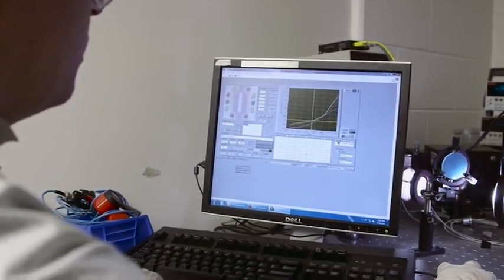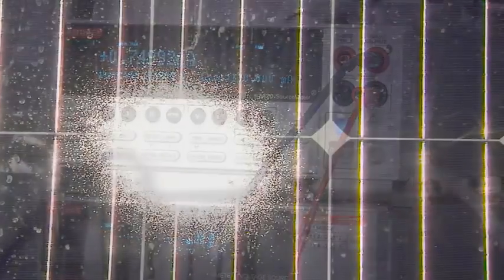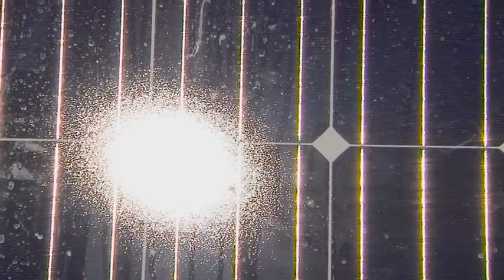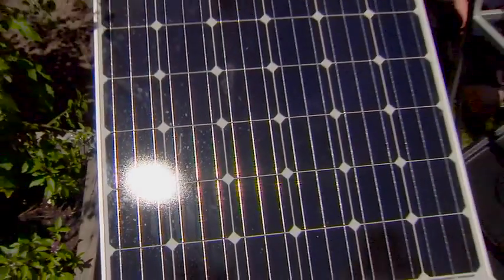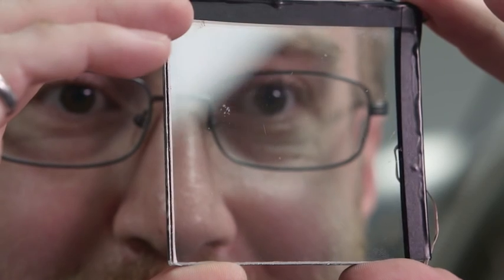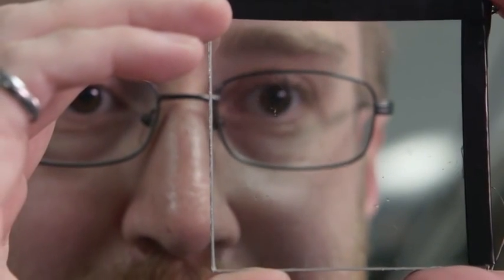A big hurdle is making them more efficient. Traditional solar panels soak up much of the sun's light and convert it to energy. A transparent panel has to let visible light shine through.